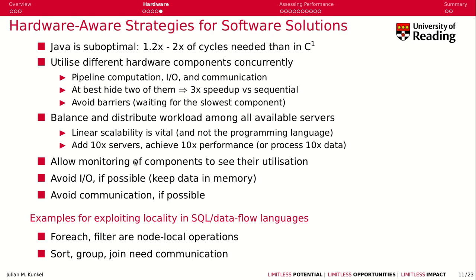Now let's talk about hardware-aware strategies inside software solutions to make them work better. Java, in terms of efficiency, is generally suboptimal — you need about twice the cycles compared to C, though studies show it can go down to 1.2 times, so about 20% more cycles than C. That said, this is only at the node level. More important is utilizing different hardware components concurrently: you want to compute, do IO, and communicate at the same time. If all three take the same amount of time, you can overlap them and get a three times speedup versus sequential execution.